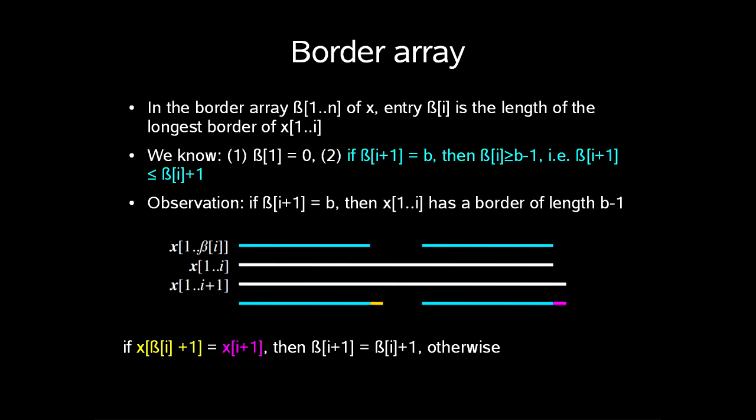So in the border array beta 1 up to n of x, entry i in beta is the length of the longest border of the prefix x1 up to i. We know that beta 1 is 0, and if beta i plus 1 is b, then beta i is larger than b minus 1. That is, entry i plus 1 in beta is less than entry i in beta plus 1. So an observation is that if entry i plus 1 in beta is b, then x1 up to i has a border of length b minus 1.